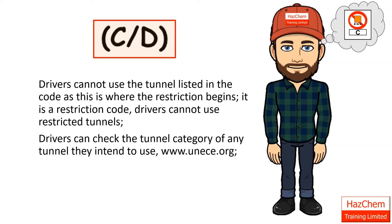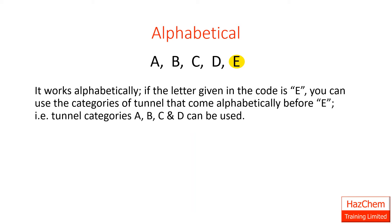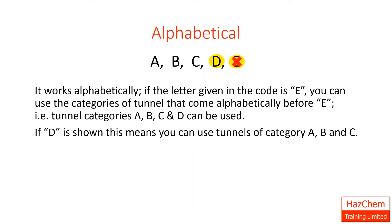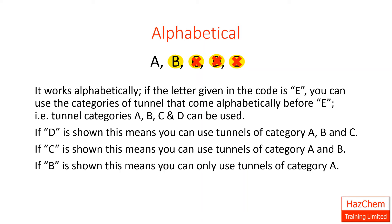Dave is wondering if he can use a Category C tunnel. It works alphabetically. If the letter given in the code is E, you can use the categories of tunnel that come alphabetically before E — tunnel categories A, B, C and D can be used. If D is shown, this means that you can use tunnels of categories A, B and C. If C is shown, this means that you can use tunnels of category A and B. And if B is shown, this means that you can use only tunnels of category A.